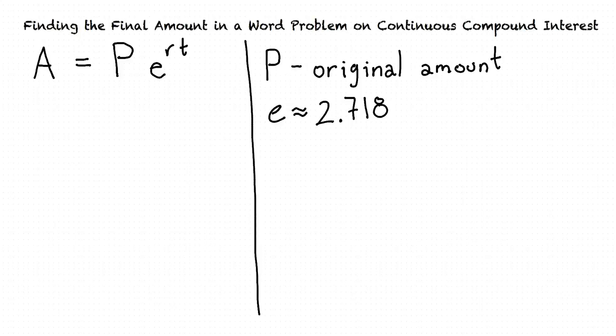The R in this equation stands for the rate of growth, and the T stands for the duration over which the interest is applied.